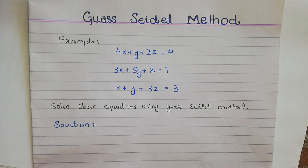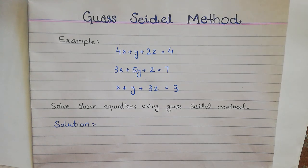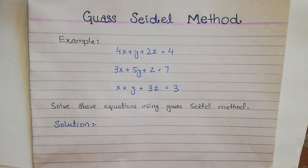What is the Gauss-Seidel method? According to its definition, the Gauss-Seidel method is an iterative method used to solve a linear system of equations. It is a method which is used to get the solution of simultaneous equations. Simultaneous equations means that you have 2 or more equations given.